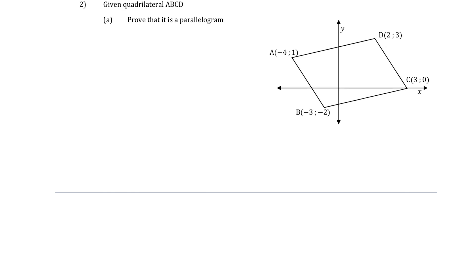Question 2: given quadrilateral ABCD, prove that it is a parallelogram. Although this shape looks like a parallelogram, we don't know it is one — the question asks us to prove it. Thinking back to the previous video, there are 5 ways to prove a shape is a parallelogram.